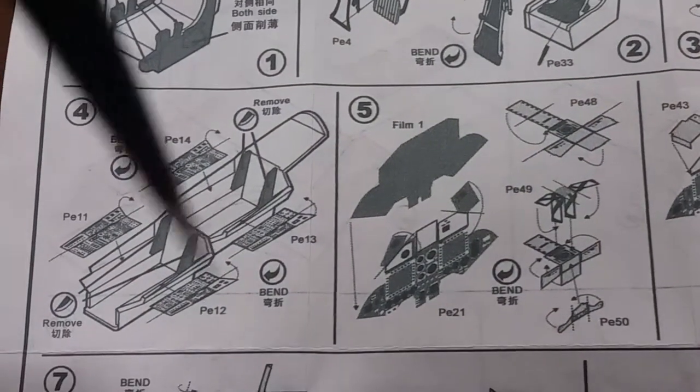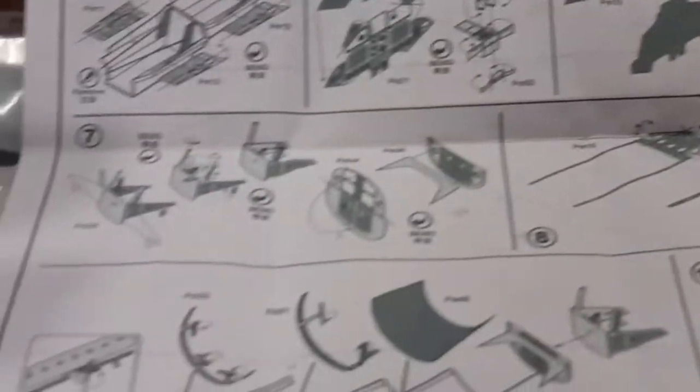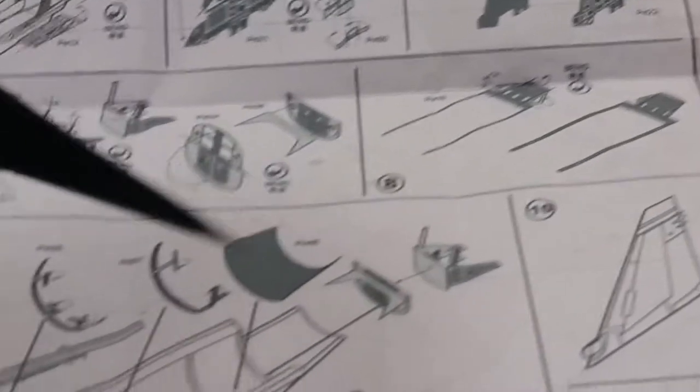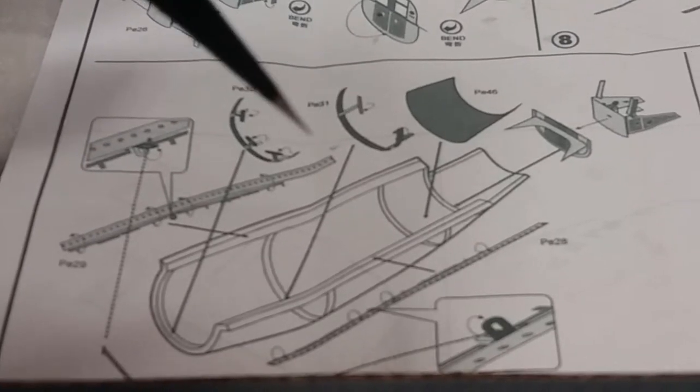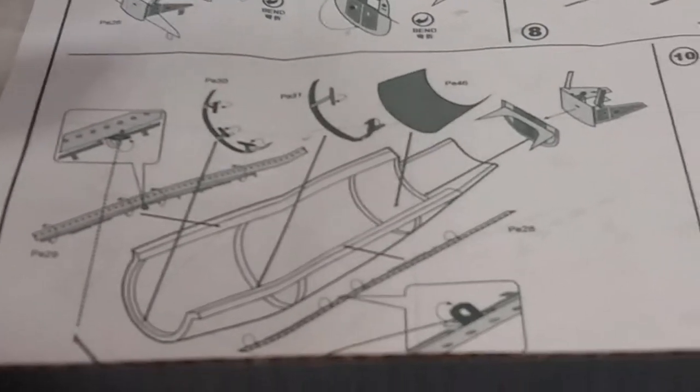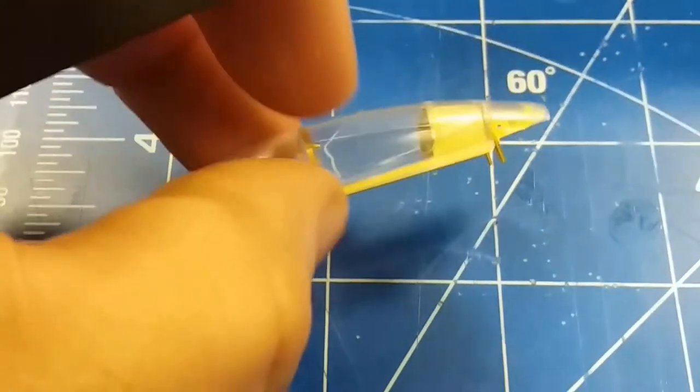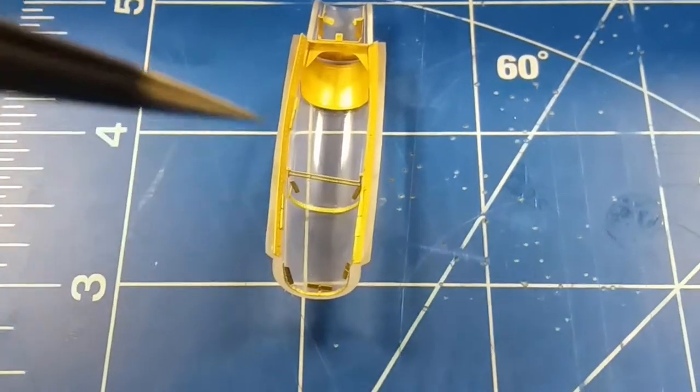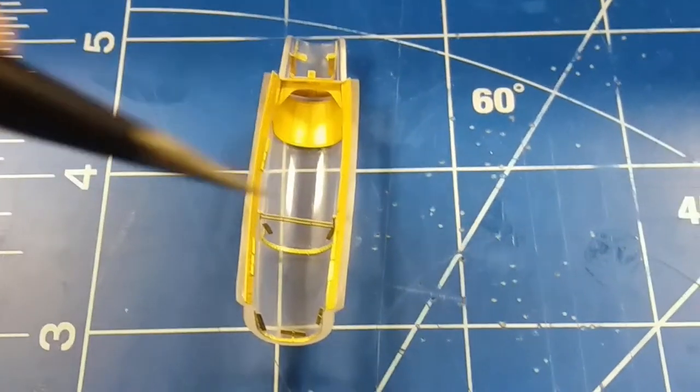And then of course these parts here are for the canopy. These broke off a couple times. One of those, I think one of these, those were really fragile, terrible. But got them on there as you see right there. I can turn it around here real quick. It was a challenge. That was a separate piece and all these, but I got it in there.